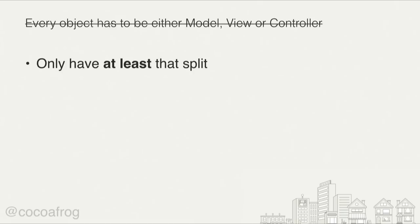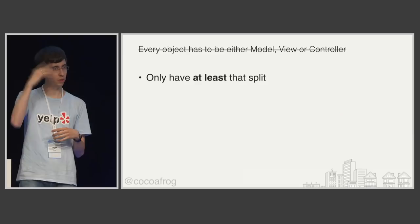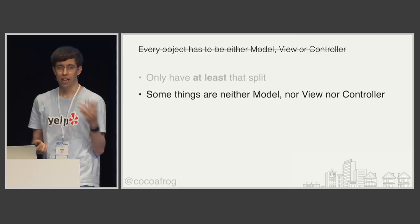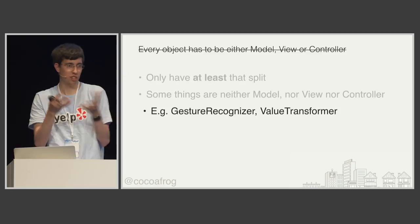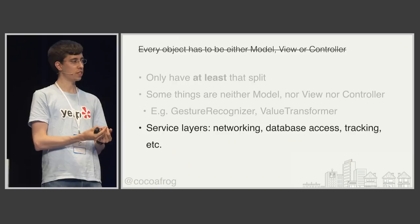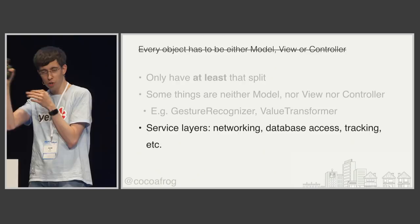All Model-View-Controller says is you should have at least that split — it's a good idea to split stuff into model, view, and controller. But some things are neither model, nor view, nor controller. You can have something like a gesture recognizer or a value transformer — they are gesture recognizers or value transformers, not models or views. In addition, you can have service layers like networking, database access, or tracking. They aren't models, views, or controllers either — they are service layers.